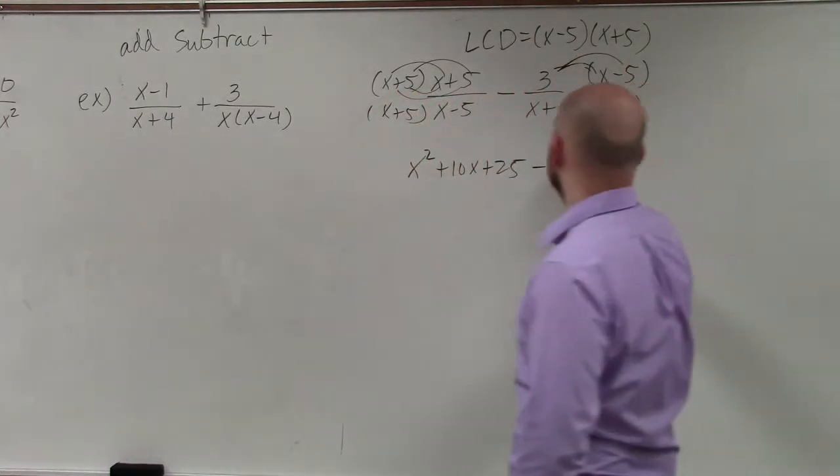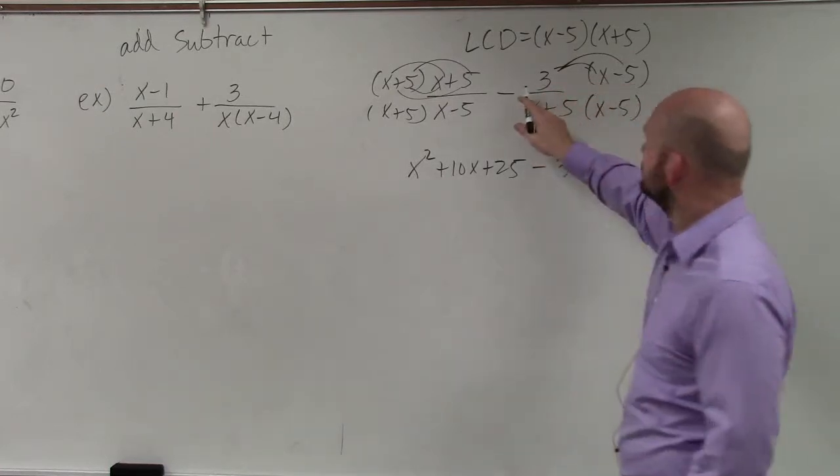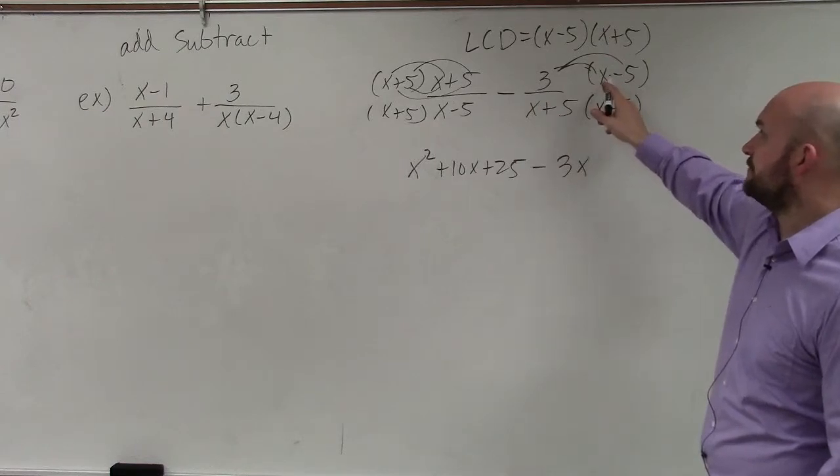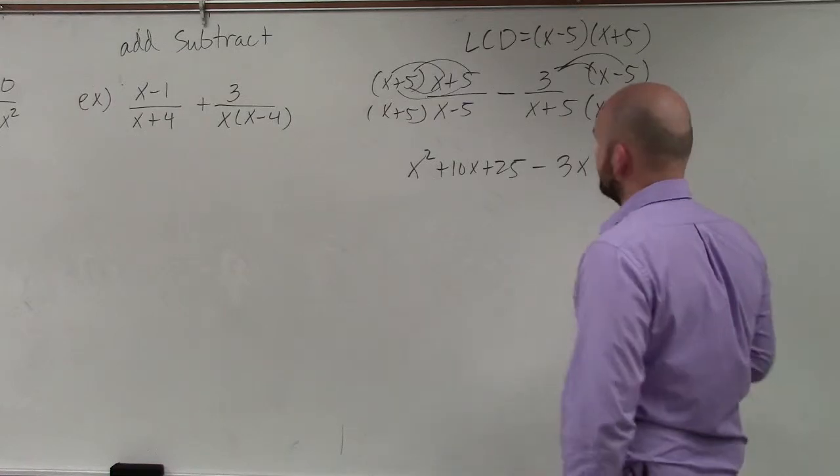here, I need to apply the distributive property, which is 3x, I'm sorry, negative 3. Right? That's a negative 3 times x, which is negative 3x. And then that's a negative 3 times negative 5, which is a positive 15.